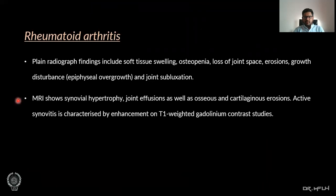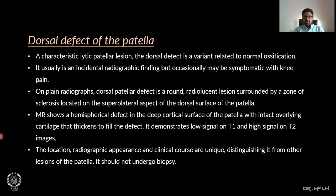Rheumatoid arthritis: plain radiographic findings include soft tissue swelling, osteopenia, loss of joint space, erosion, growth disturbances, and joint subluxation. MRI shows synovial hypertrophy, joint effusion, as well as osseous and cartilage involvement. Active synovitis is characterized by enhancement on T1-weighted gadolinium contrast sequences.